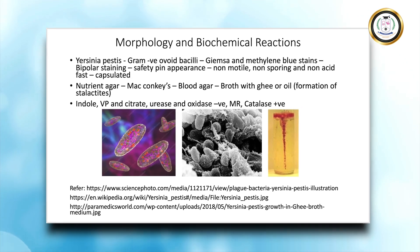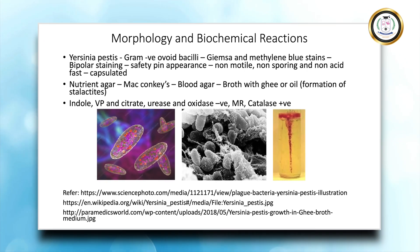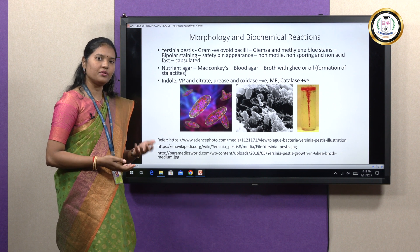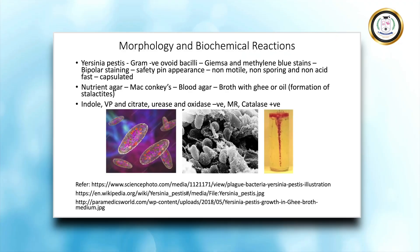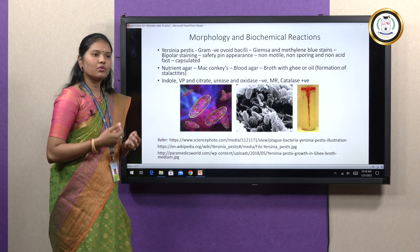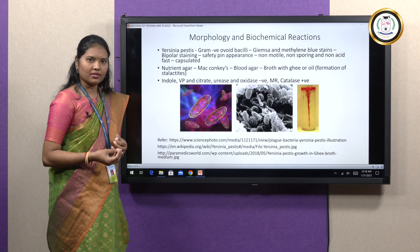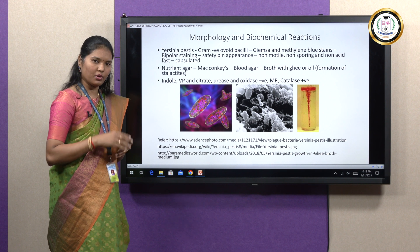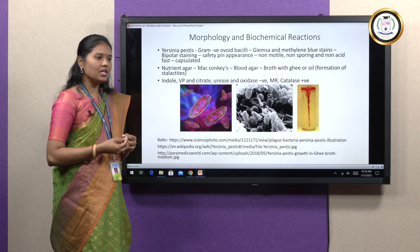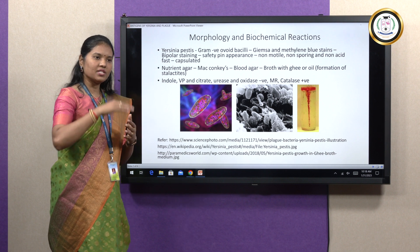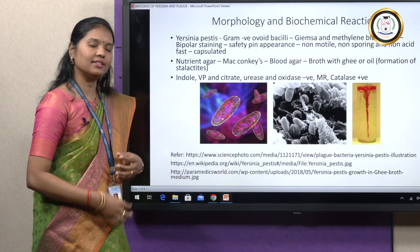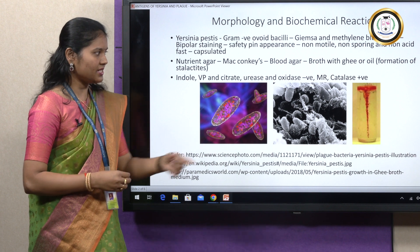Talking about its cultural characteristics, Yersinia does not require any special media for its growth. It can grow on nutrient agar itself under optimal conditions, as well as on blood agar and MacConkey agar. If grown on nutrient broth containing oil or ghee floated on top, it gives a characteristic stalactite-like growth, where the growth starts from the surface of the broth and descends into it. You can see an image of the stalactite formation by Yersinia pestis in the last image.